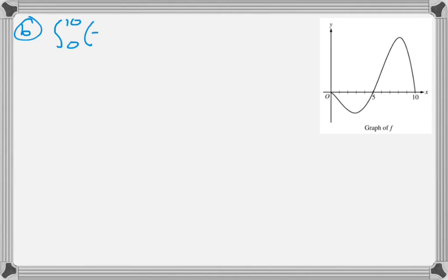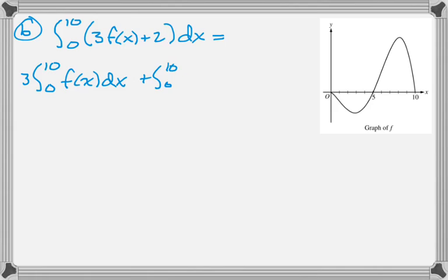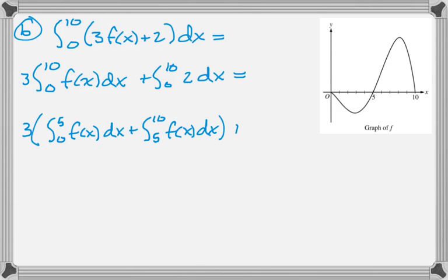Part B: we have a definite integral to evaluate, the integral from 0 to 10 of (3f(x) + 2)dx. Let's use some properties of definite integrals. I'm going to break it up into two separate integrals. I'll further break this up because f(x) is clearly divided between 0 and 5, and then 5 and 10. So it will be the integral from 0 to 5 of f(x)dx plus the integral from 5 to 10 of f(x)dx, all of that times 3.